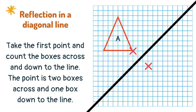Take the first point and count the boxes across and down to the line. The point is two boxes across and one box down to the line. To reflect in a diagonal line, flip the horizontal and vertical components — so place the point two boxes down and one box across.